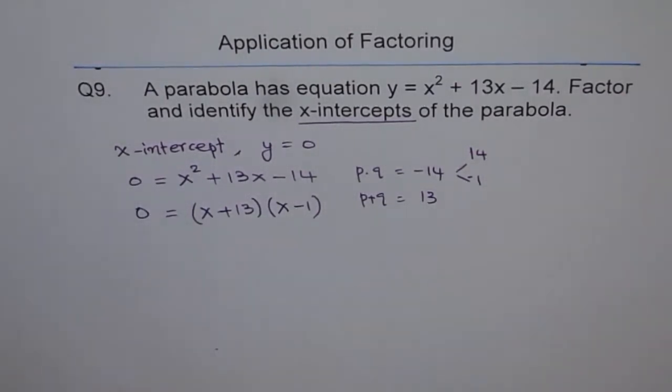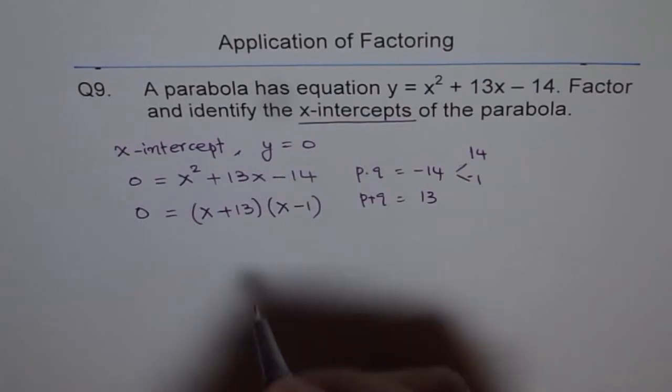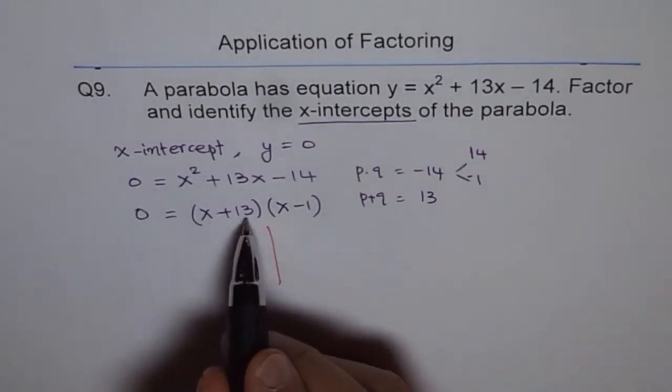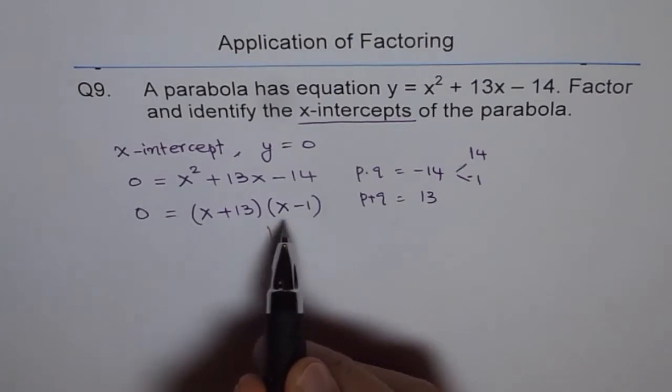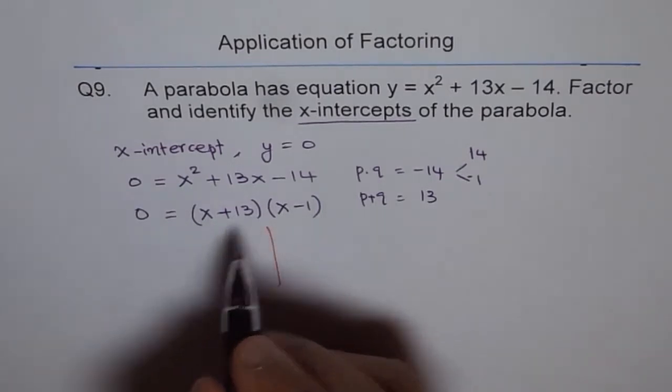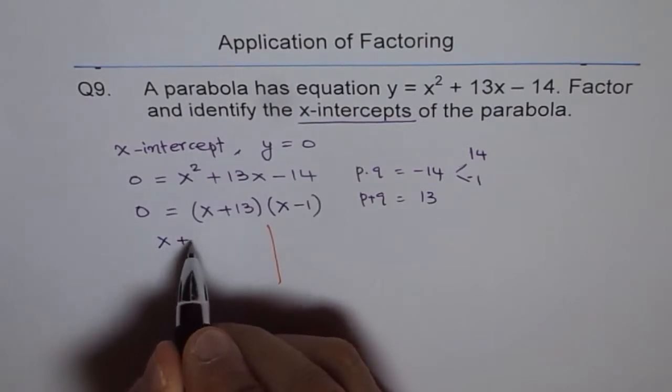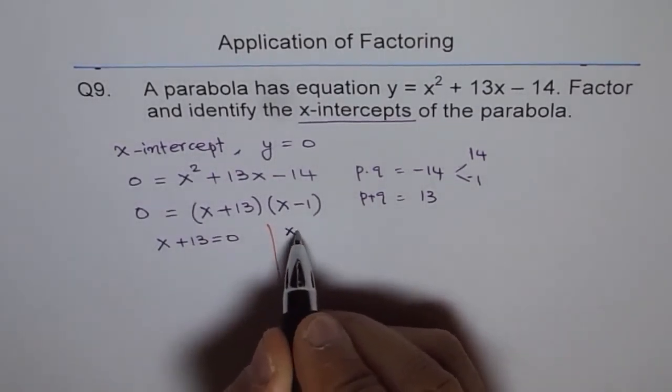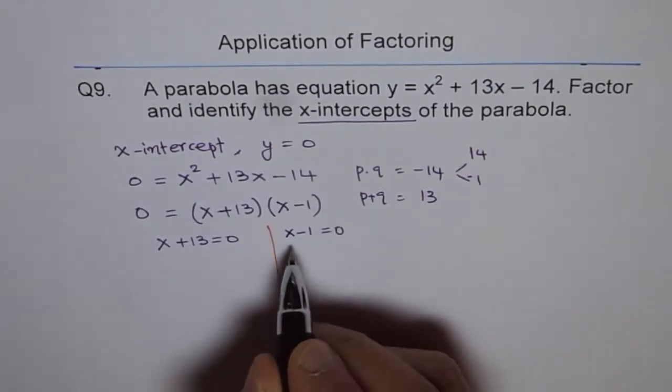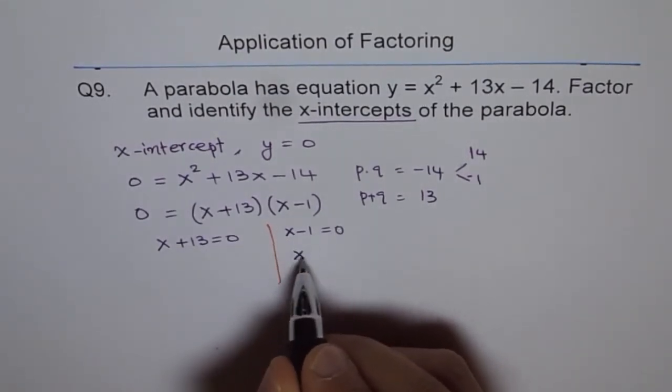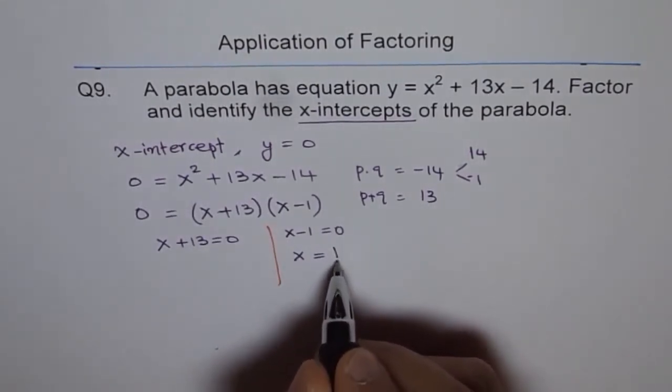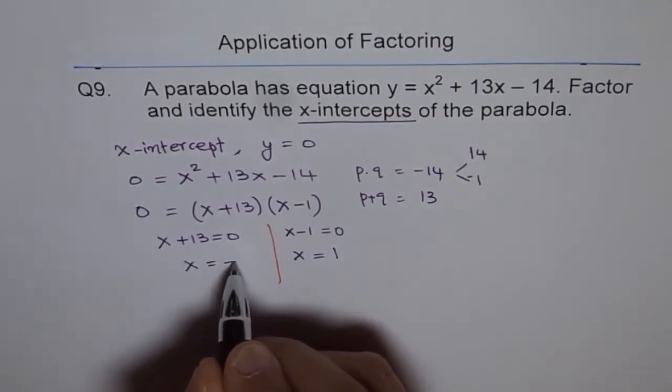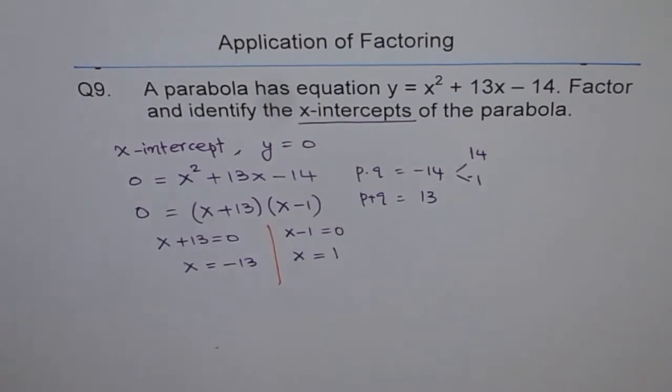When can this be 0? For that to be 0, you can have x + 13 = 0 or x - 1 = 0. x - 1 = 0 means x = 1, so that is one of the x-intercepts. The other one is x = -13, which is the other x-intercept.